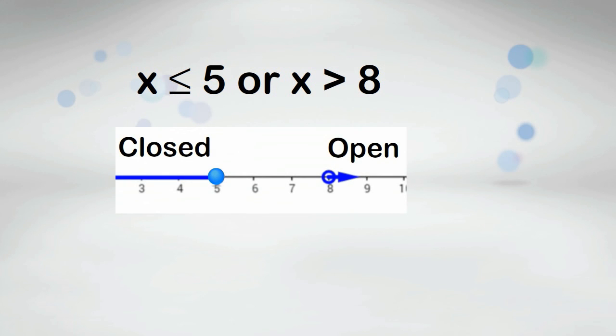x is less than or equal to 5 or x is greater than 8. This inequality will point in two different directions because it uses or.